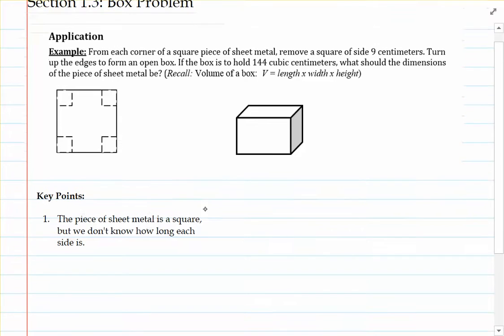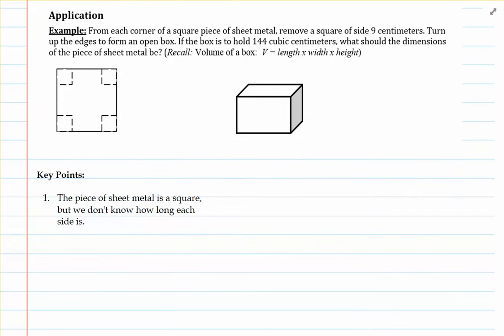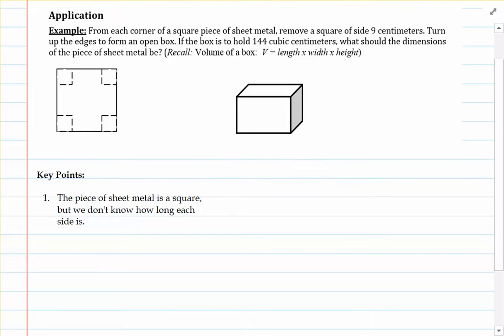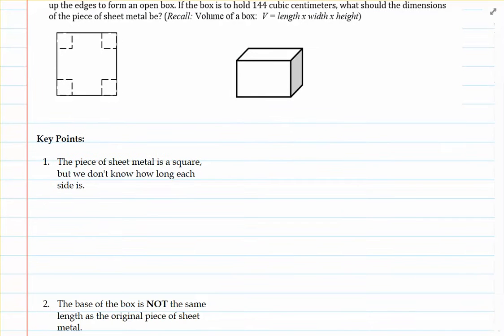All right, the first key point is that the piece of sheet metal is a square. However, we don't know how long each side of the square is, so that's probably where we should start. And by start, I mean let's assign a variable to the unknown side length of the piece of sheet metal.